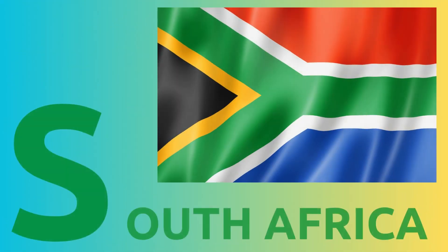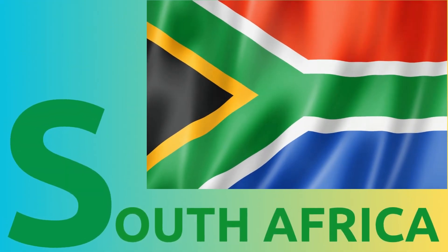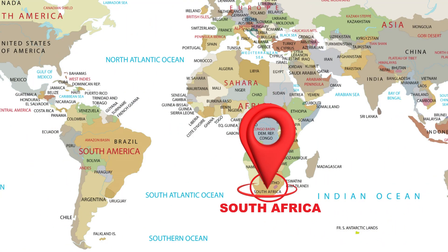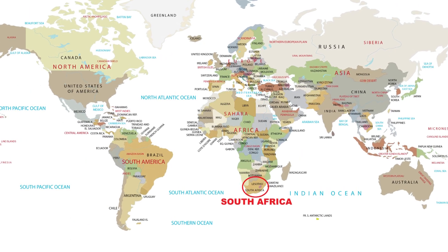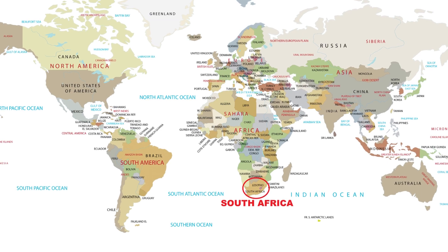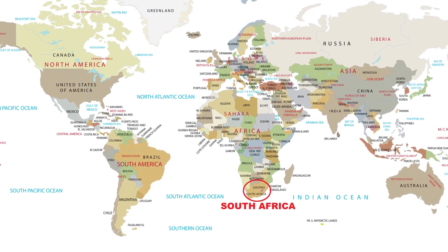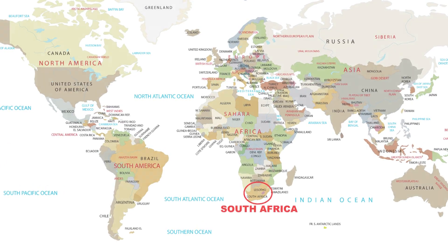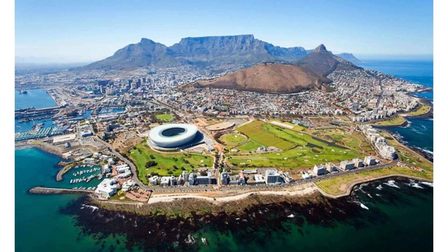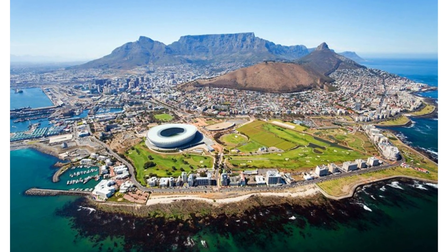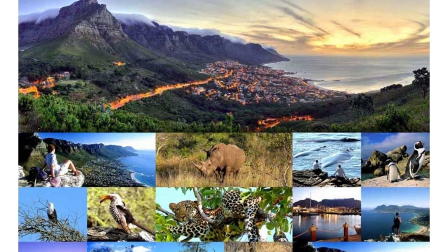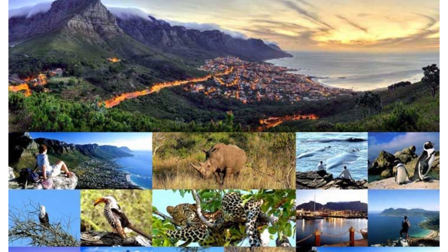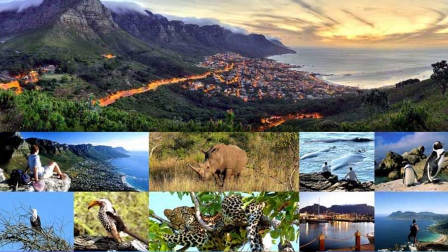S. S for South Africa. Official name: the Republic of South Africa. South Africa is the largest producer of macadamia nuts in the world. The first heart transplant in the world took place in South Africa. South Africa has 11 official languages. South Africa is home to the cradle of humankind.